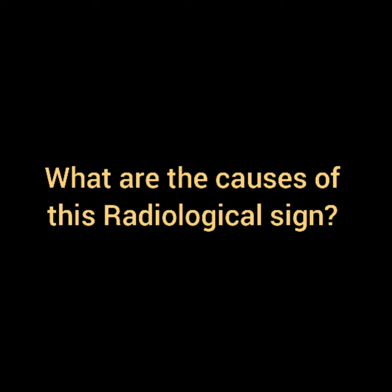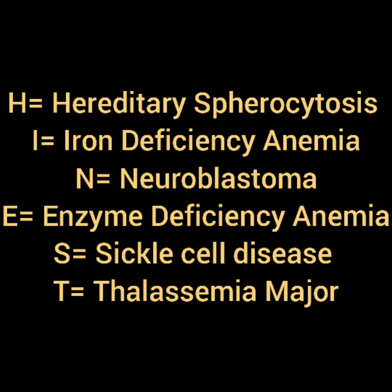You may be asked what are the causes of this radiological sign. You can tell the causes in the form of the mnemonic HINEST: H for hereditary spherocytosis, I for iron deficiency anemia, N for neuroblastoma, E for enzyme deficiencies which lead to hemolytic anemias, S for sickle cell with thalassemia, and T for thalassemia.